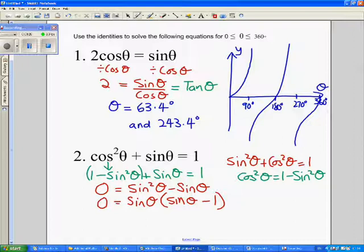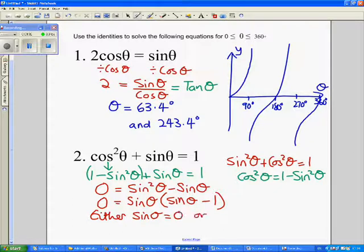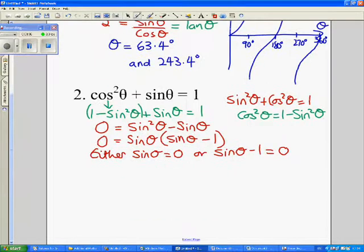So that means either sin θ equals 0, or sin θ minus 1 equals 0. Giving us then that sin θ equals 0, or, adding 1 to both sides, 1.